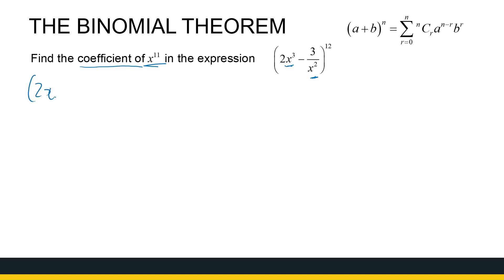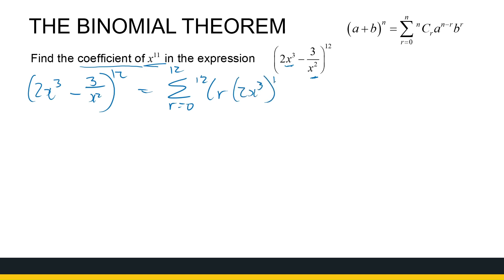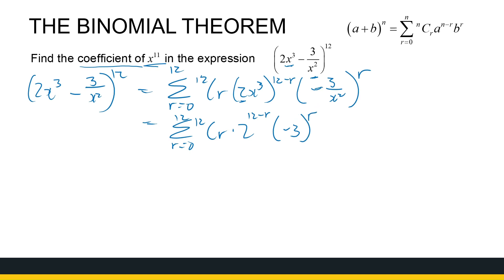(2x³ − 3/x²)^12 with sigma notation. That's the sum when r goes from 0 to 12 of 12Cr. Then I've got (2x³) to the power (12 − r), and (−3/x²) to the power r. So if we tidy that up, r goes from 0 to 12 of 12Cr. For coefficients: I've got 2 to the power (12 − r), and (−3) to the power r. Keep the minus with the coefficients and constants — don't put the minus with the x. Then I've got x to the power 3(12 − r), which is 36 − 3r, and this term gives me x to the power −2r.